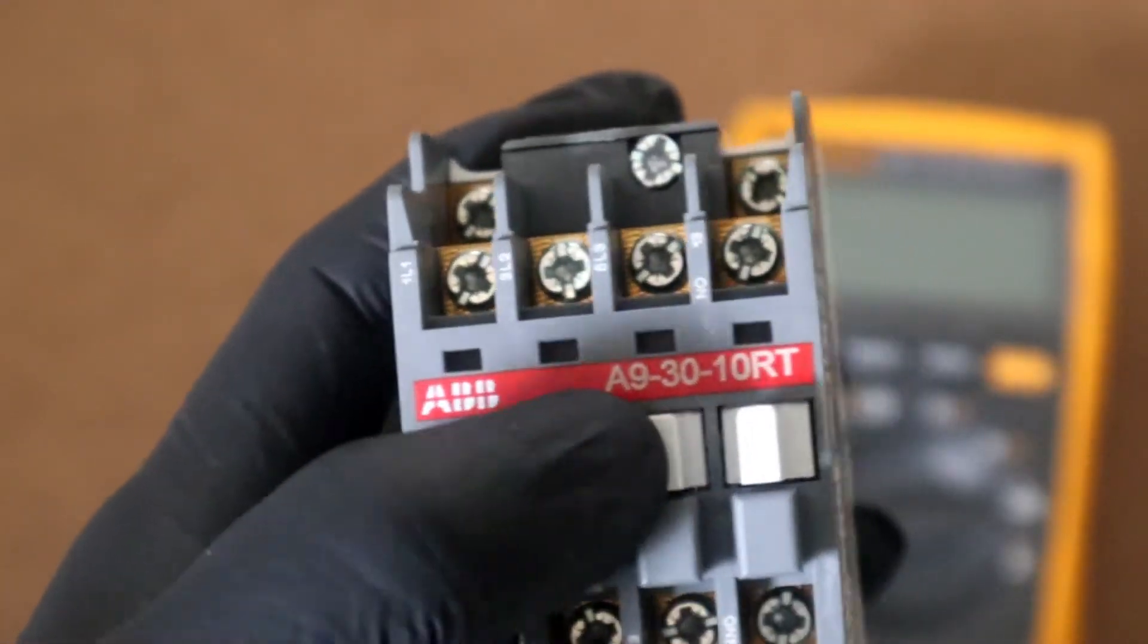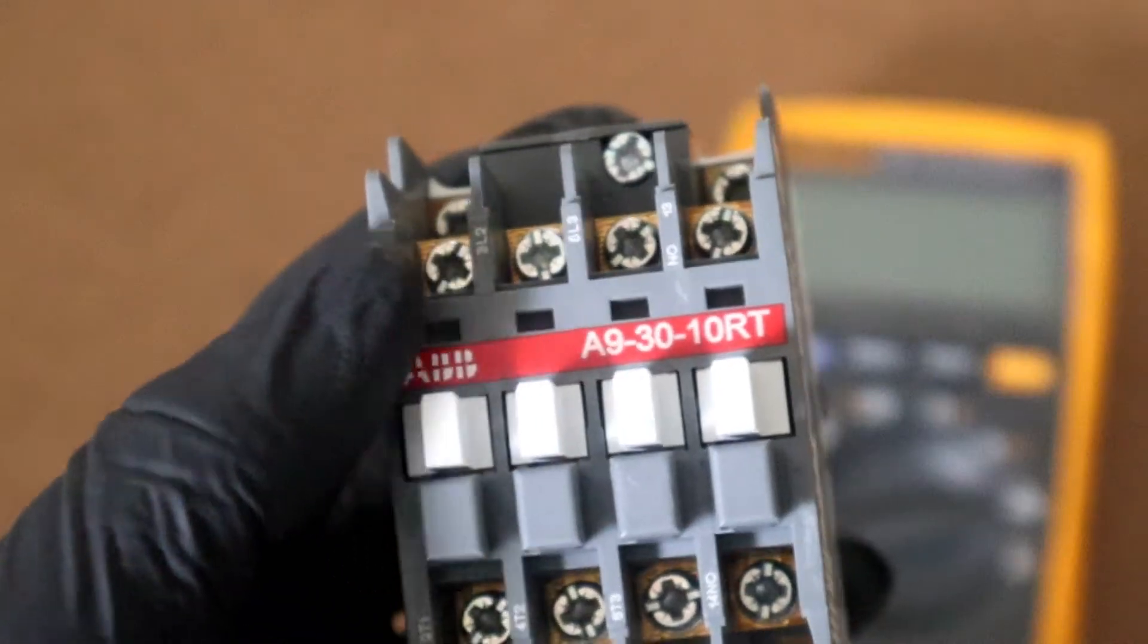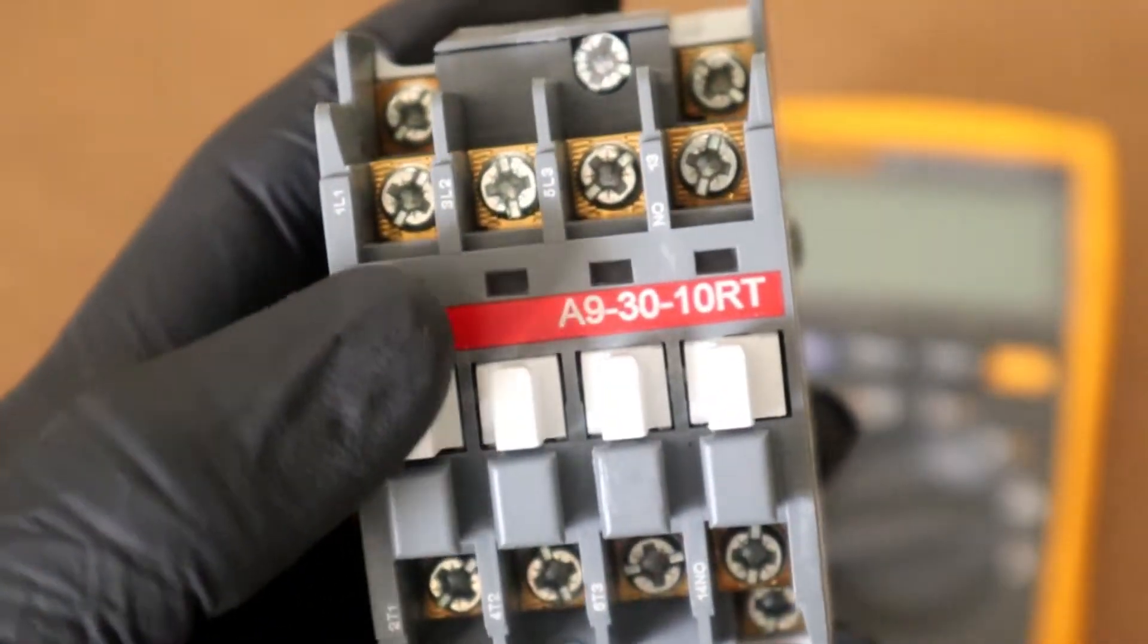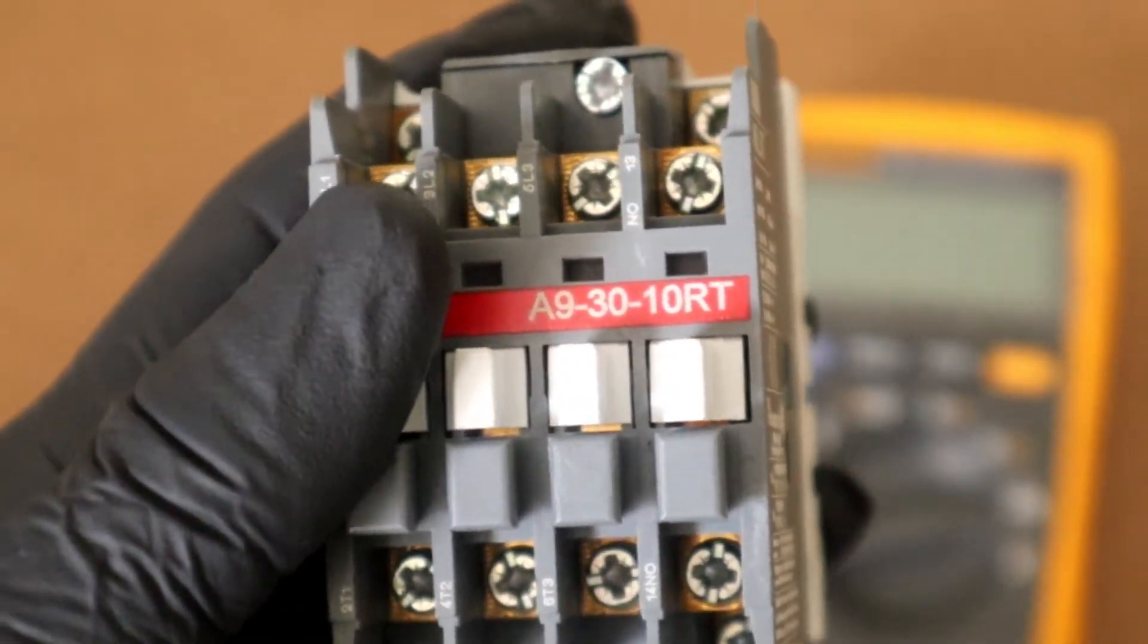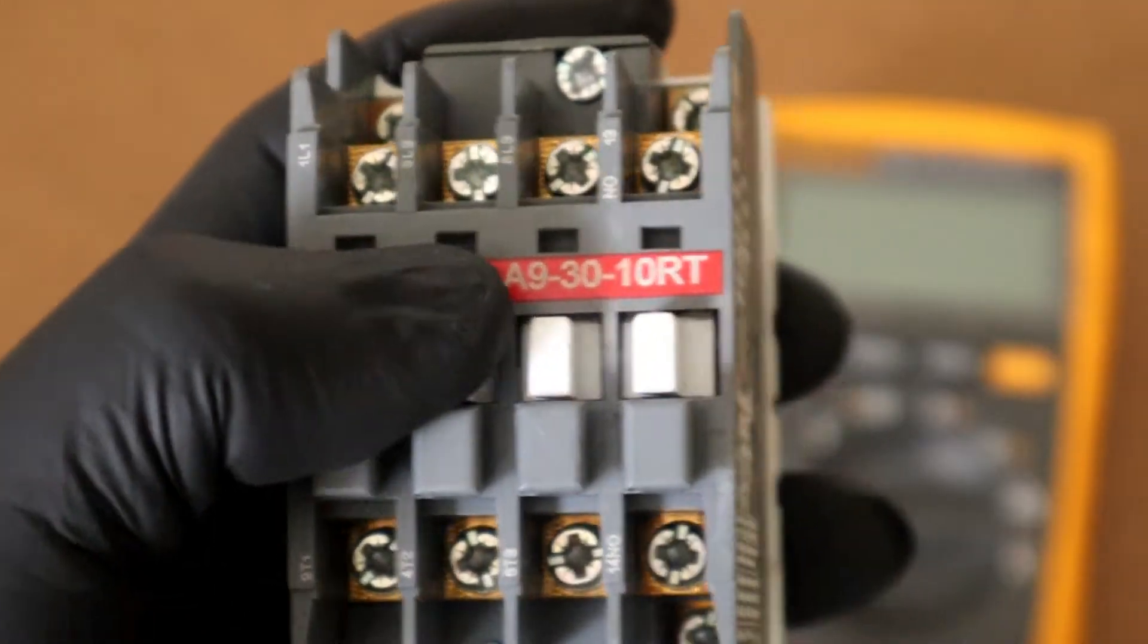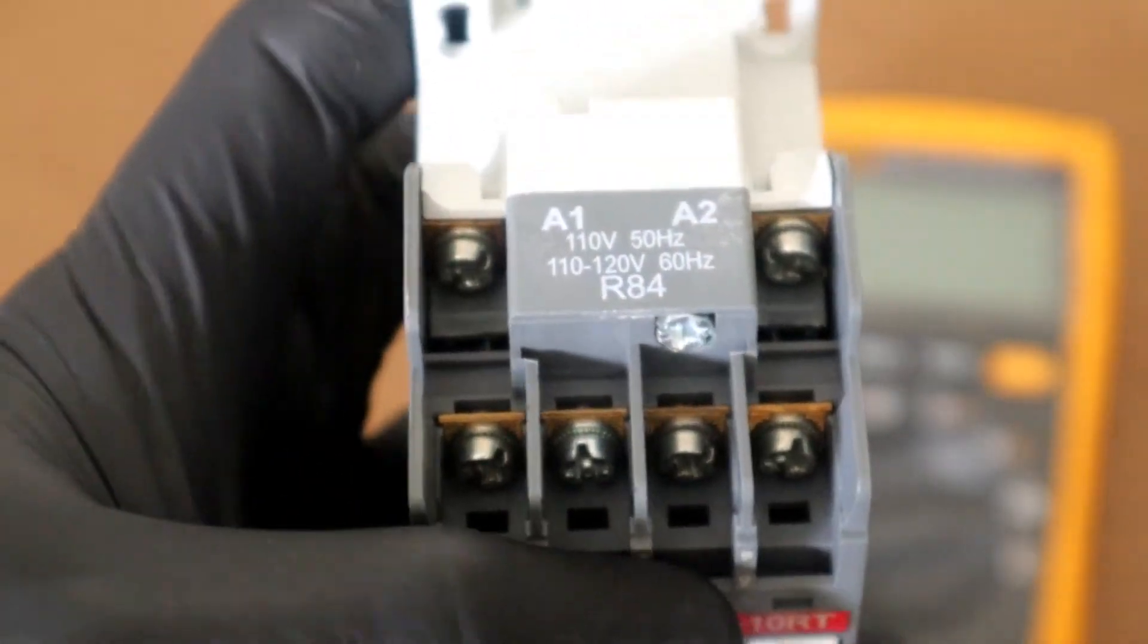What is a contactor? A contactor is an electrically controlled switch. It's also referred to as a relay however it has higher current and voltage switching capabilities. Contactors are used for switching a power circuit on and off with a separate voltage supply.